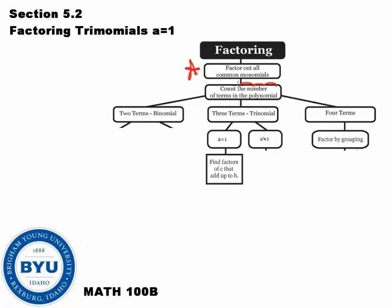The next thing you do is count the number of terms in the polynomial. If it has four terms, you take that route and factor by grouping. If it's got three terms — that's what we're going to talk about today — the first thing you need to do is look at the leading coefficient, the number with the highest power. If the a value is 1, meaning it's just x squared, then we use this method. If it's not, we'll use a different method covered in the next video, sections 5-3 and 5-4.